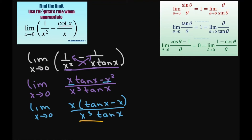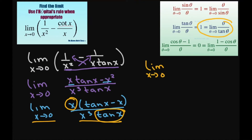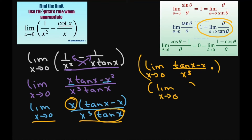I can split this up and write it as two different limits. I'm going to pull out the x and the tan of x — I know that equals 1 — so I'm going to write the limit as x approaches 0 of tan of x divided by x cubed, times the limit as x approaches 0 of x divided by tan of x. This second limit is just 1, so we're multiplying by 1.